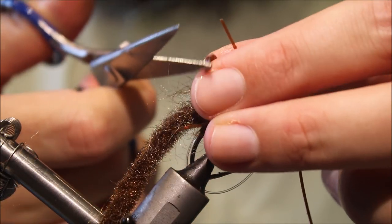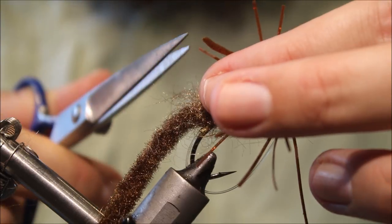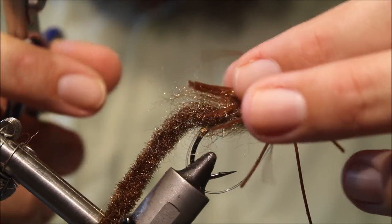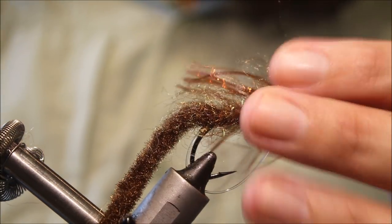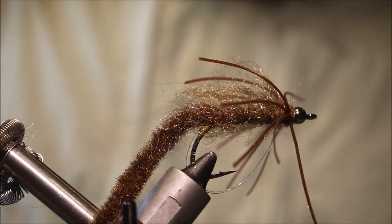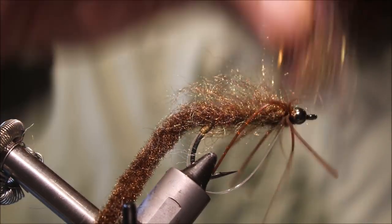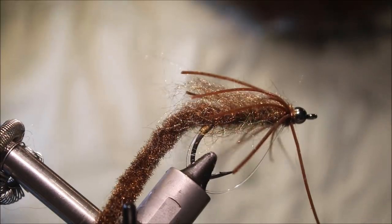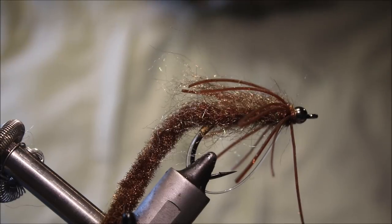Last thing to do is just to separate these legs. You can play with them if you like. Just get a wee last rub to pick out some of this dubbing at the head there. And there you go. That's the Fukushima worm. Very effective bass fly.